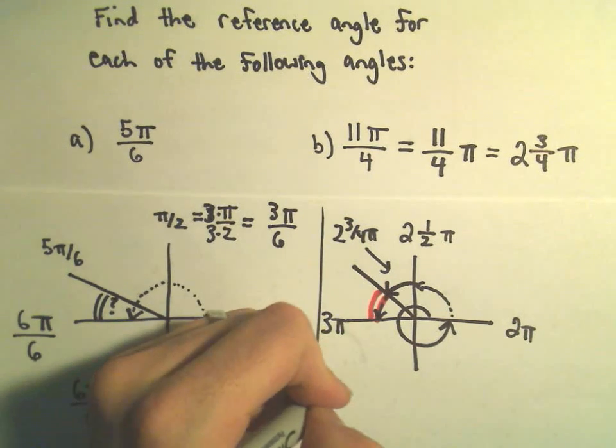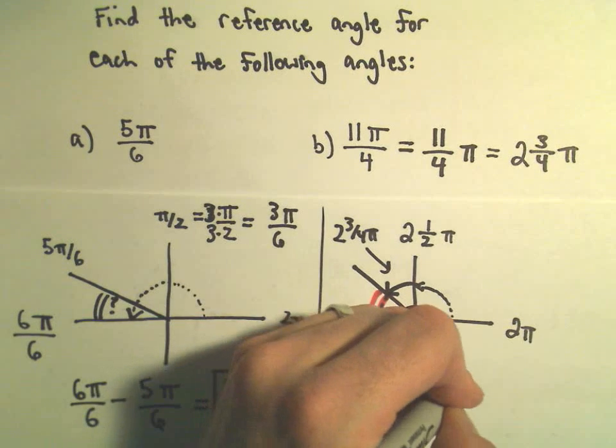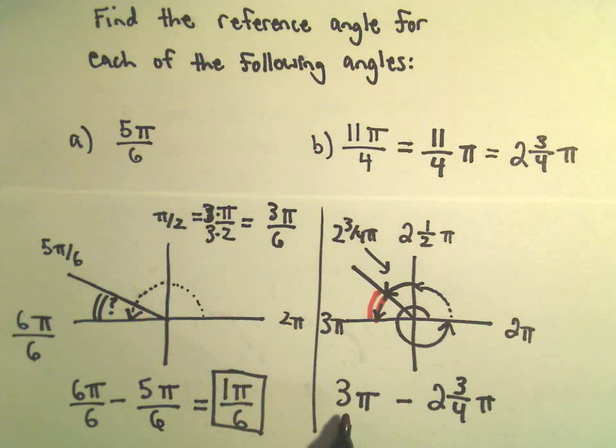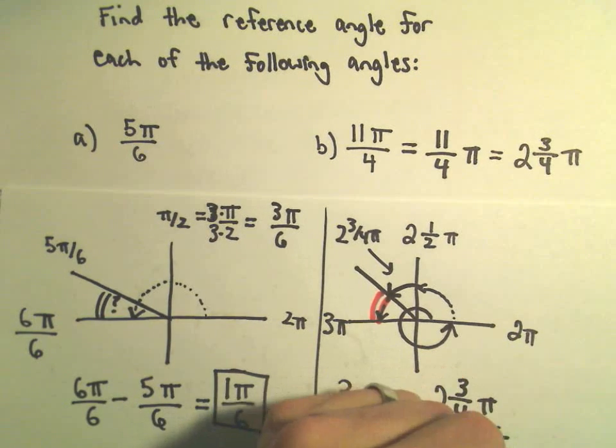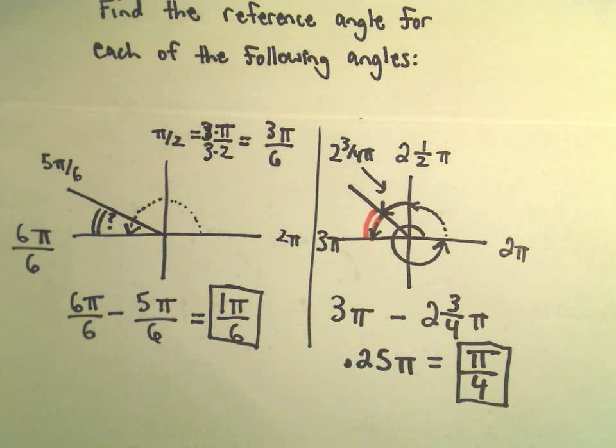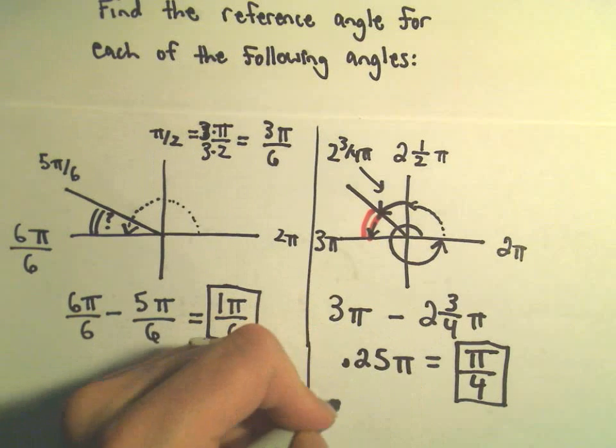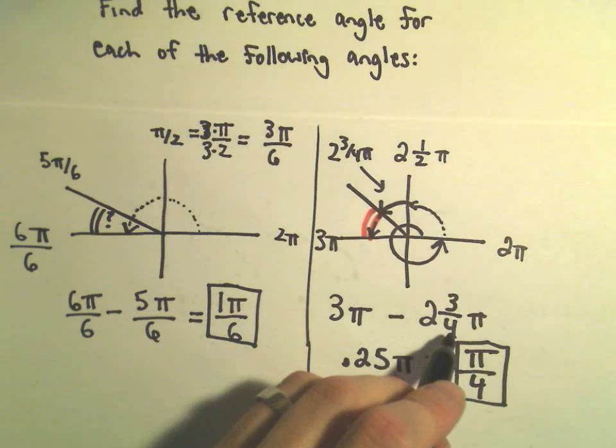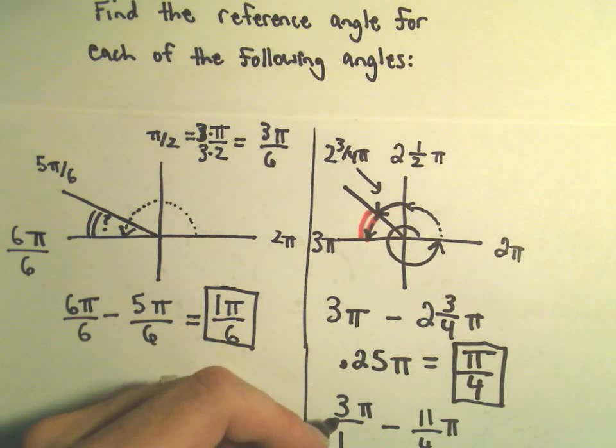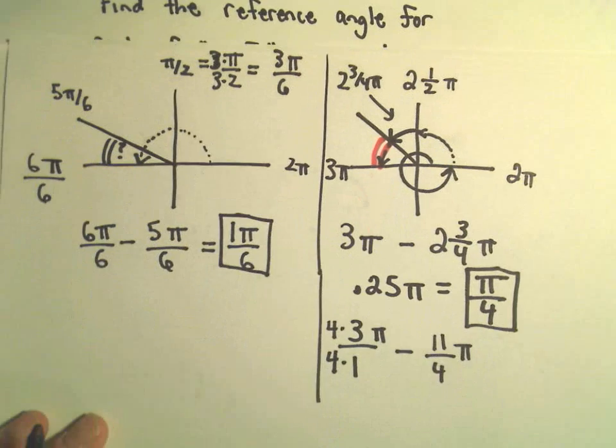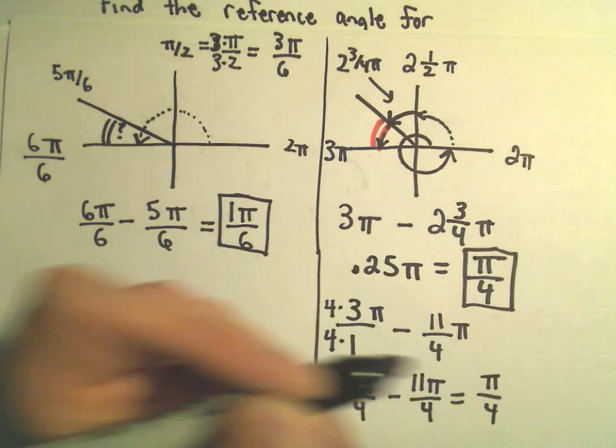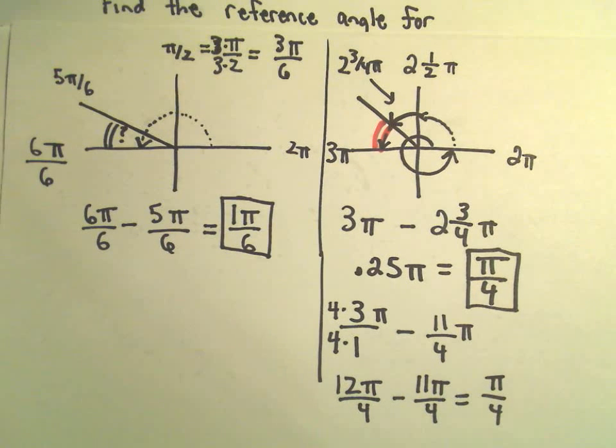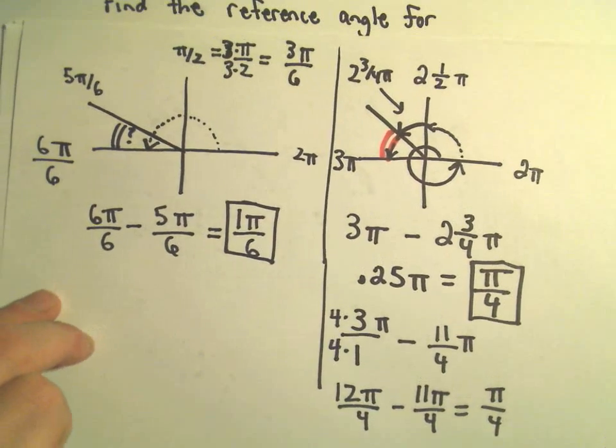I'm going to do the same thing, I'm just going to simply subtract. I'm going to take 3π and subtract away 2 and 3 fourths π. You can think about 2 and 3 fourths as 2.75, so 3 minus 2.75 would be 0.25π, or equivalently, that would be 1 fourth π, or π over 4. If you don't like the decimal argument, you can rewrite this as 3 over 1 π. We could turn this back into 11 over 4 π. You could multiply top and bottom of the first fraction by 4, that would give you 12π over 4 minus 11π over 4, which again would give you π over 4.